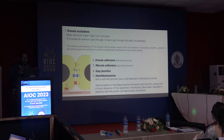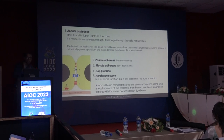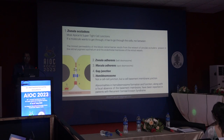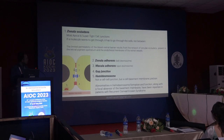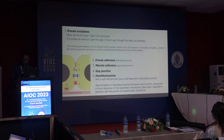J for junctions. There are five types of cell junctions: zonula occludens, zonula adherens, macula adherens, gap junctions, and hemidesmosomes. Hemidesmosomes are not cell-to-cell junctions but cell-to-basement membrane junctions. Abnormalities in hemidesmosome formation can be seen in diabetics and mainly in recurrent corneal erosion syndrome.